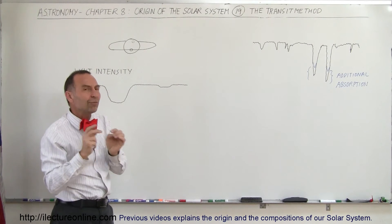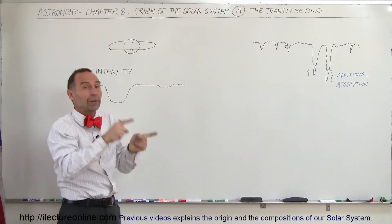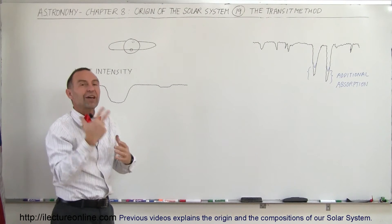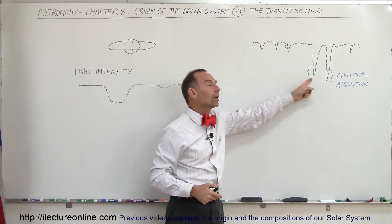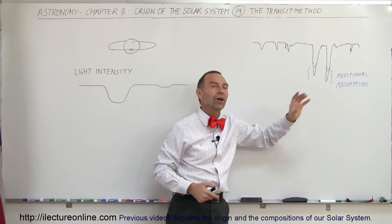So we have all kinds of methods of actually determining there's a planet there, we know how big it is, we know how fast it's moving, and then we can actually begin to detect some of the composition of the atmosphere of some of those planets.